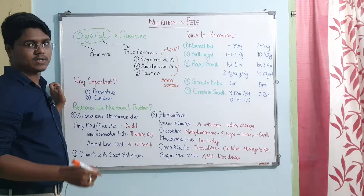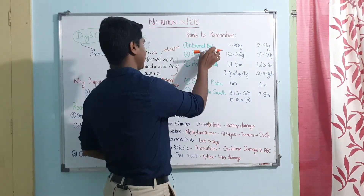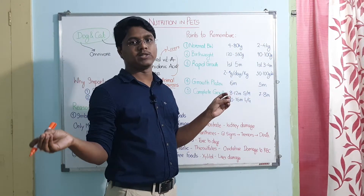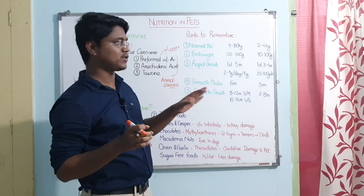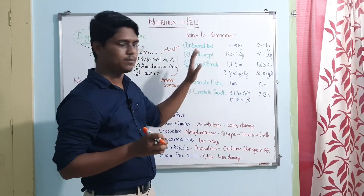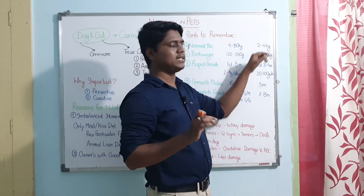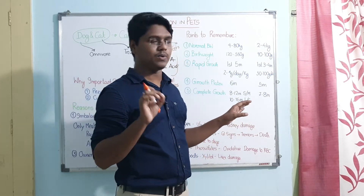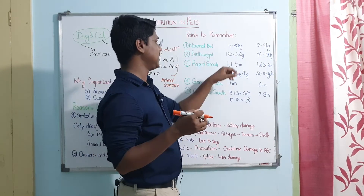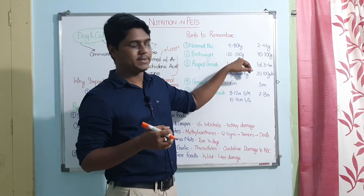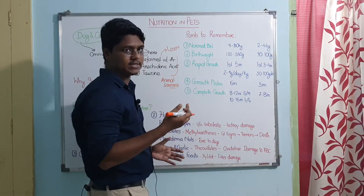Regarding normal body weight: dogs vary widely by breed, from Chihuahua to Great Dane, ranging 4 to 80 kg on average. Cats have much less variation — 2 to 4 kg, with males usually 3 to 4 kg and females 2 to 3 kg. Birth weight in dogs ranges from 120 to 550 grams, whereas in cats it is mostly 90 to 100 grams as a healthy birth weight.